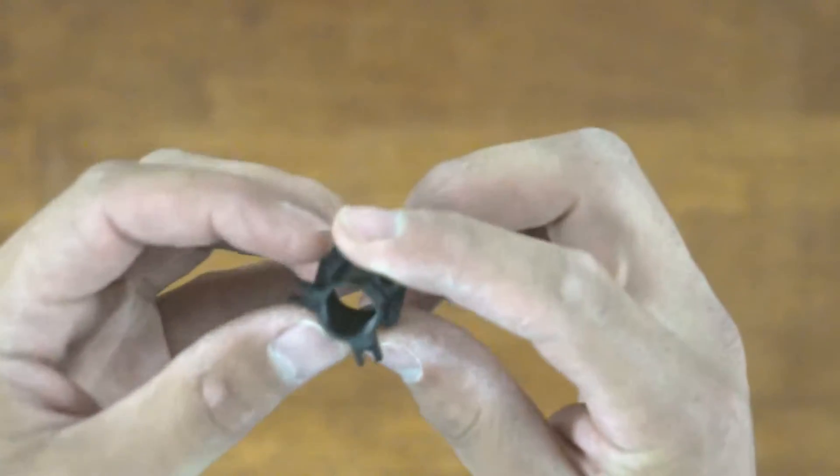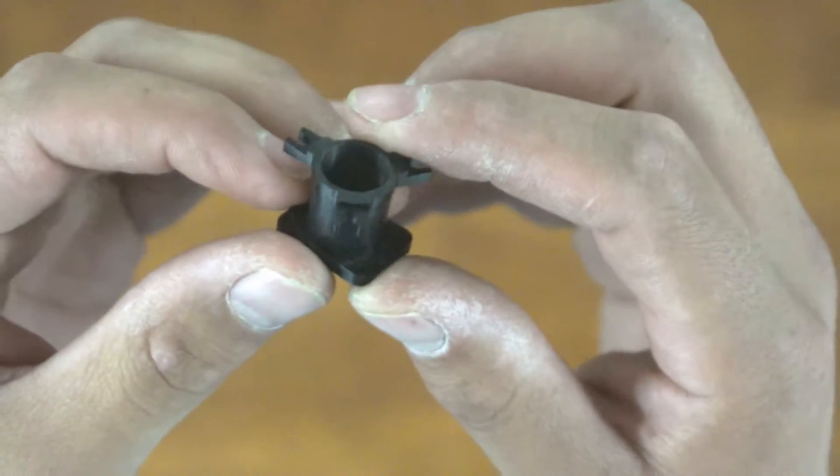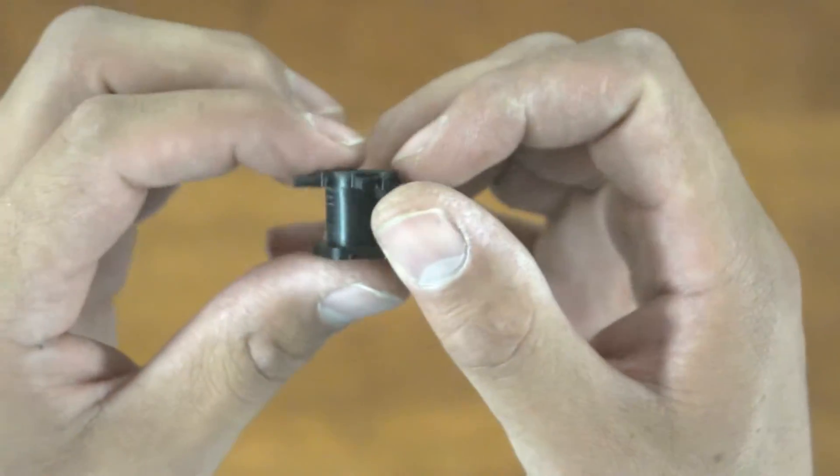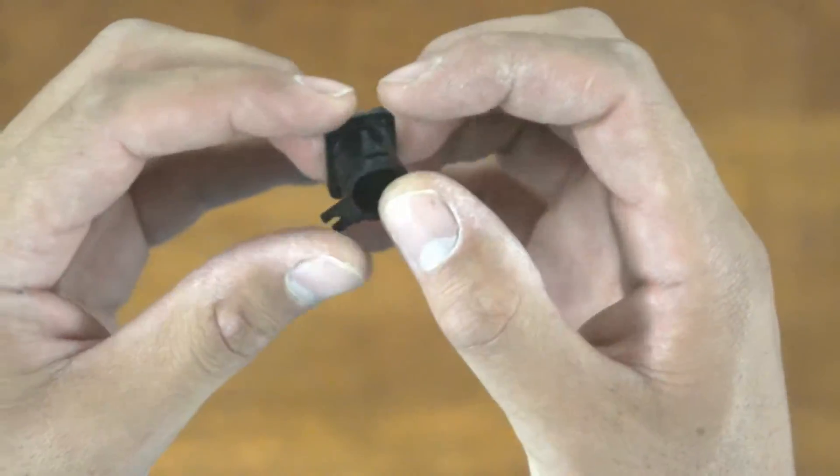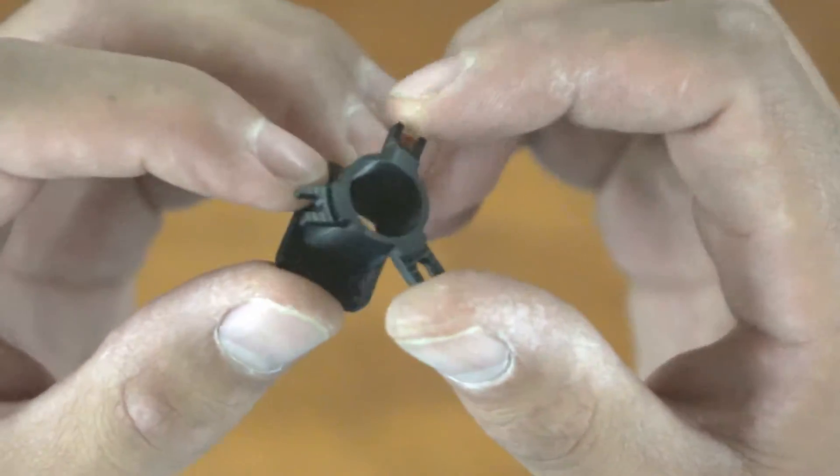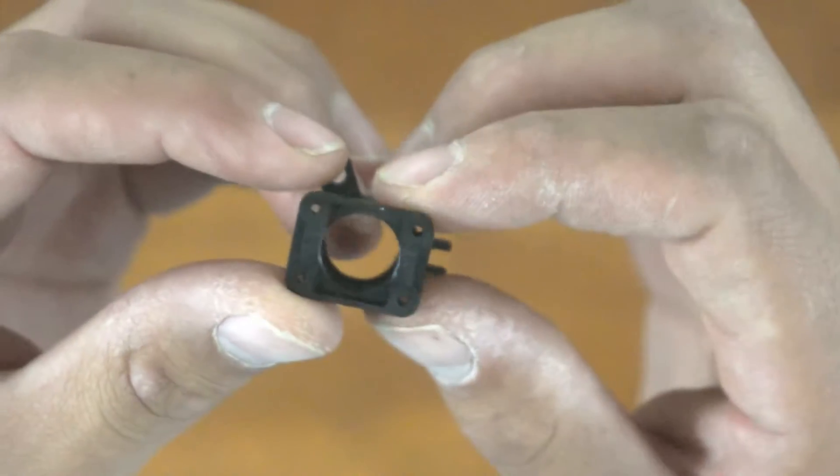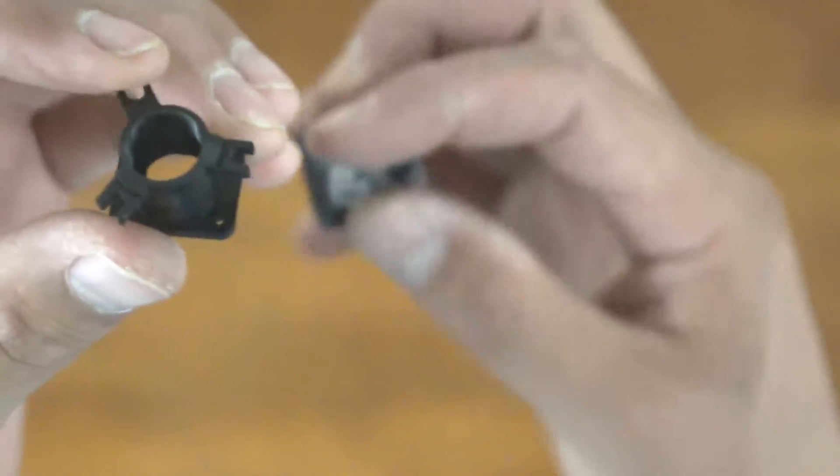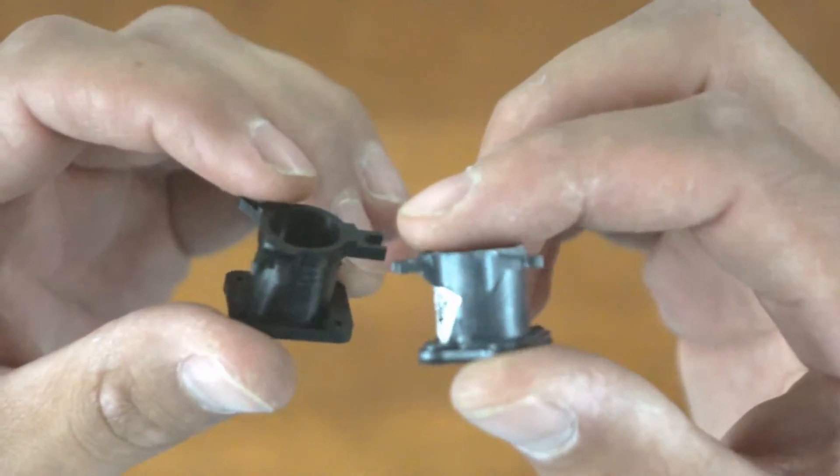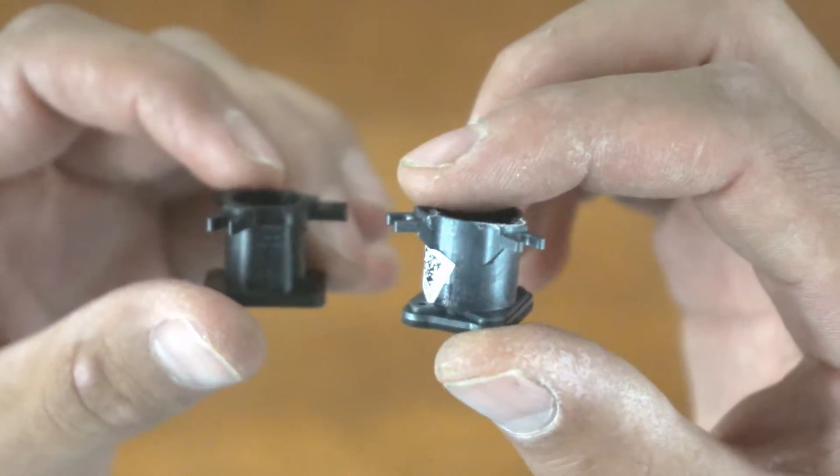This is what the super mount looks like, as compared to the stock HERO3 Black Plus lens mount.